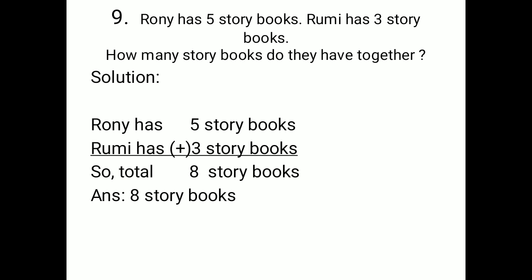Solution: Ronnie has 5 story books, and the second line — Rumi has 3 story books. So, if you want to get the total result, you have to add 5 and 3. 5 and 3 make 8. So, total 8 story books. Write down the answer: 8 story books.